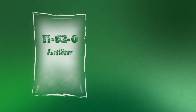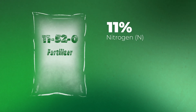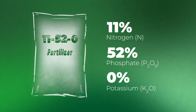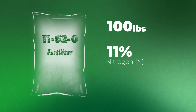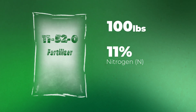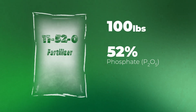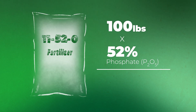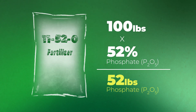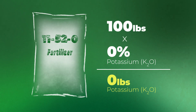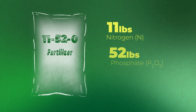To break that down, whenever we look at an 11-52-0, we're going to have 11% nitrogen, 52% phosphate or P2O5, and in this case 0% K2O. Looking at 100 pounds, we take 11% nitrogen multiplied by 100 pounds — that gives us 11 pounds of nitrogen in that mix. Moving on to phosphate, we take that 52% multiplied by 100 pounds, giving us 52 pounds of phosphate in that blend. And there's 0 K2O, so multiply that by 100 and we end up with 0. In that total analysis, we have 11 pounds of nitrogen and 52 pounds of phosphate.